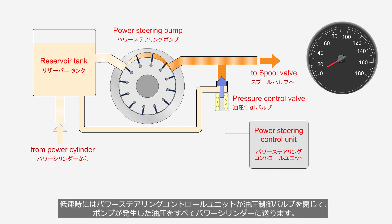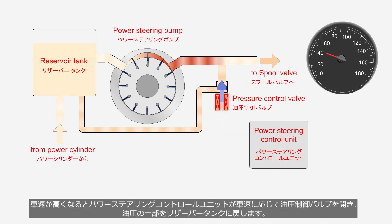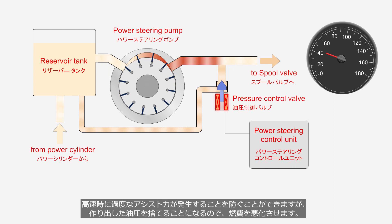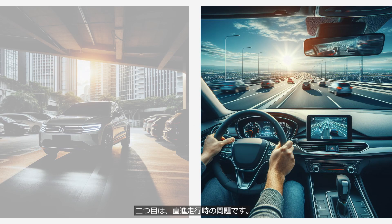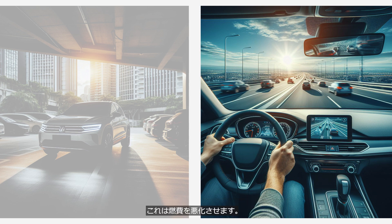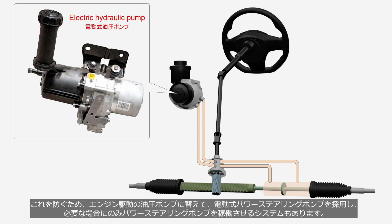At low vehicle speed, the power steering control unit closes the hydraulic control valve, supplying all generated hydraulic pressure to the power cylinder. As vehicle speed increases, the control unit opens the hydraulic control valve in accordance with vehicle speed, returning a portion of the hydraulic pressure to the reservoir tank. This prevents excessive assistance force at high speed, but discarding the generated hydraulic pressure leads to a decrease in fuel efficiency. The second disadvantage: even when the car is running straight and power steering is not active, the pump continues to generate hydraulic pressure, further reducing fuel efficiency. To prevent this, some models adopt an electric-driven hydraulic pump instead of an engine-driven one, operating only when hydraulic pressure is required.